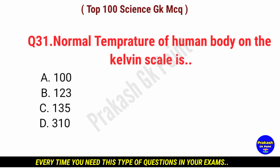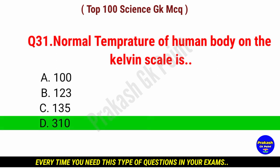Normal temperature of a human body on the Kelvin scale is? Answer: option D, 310.